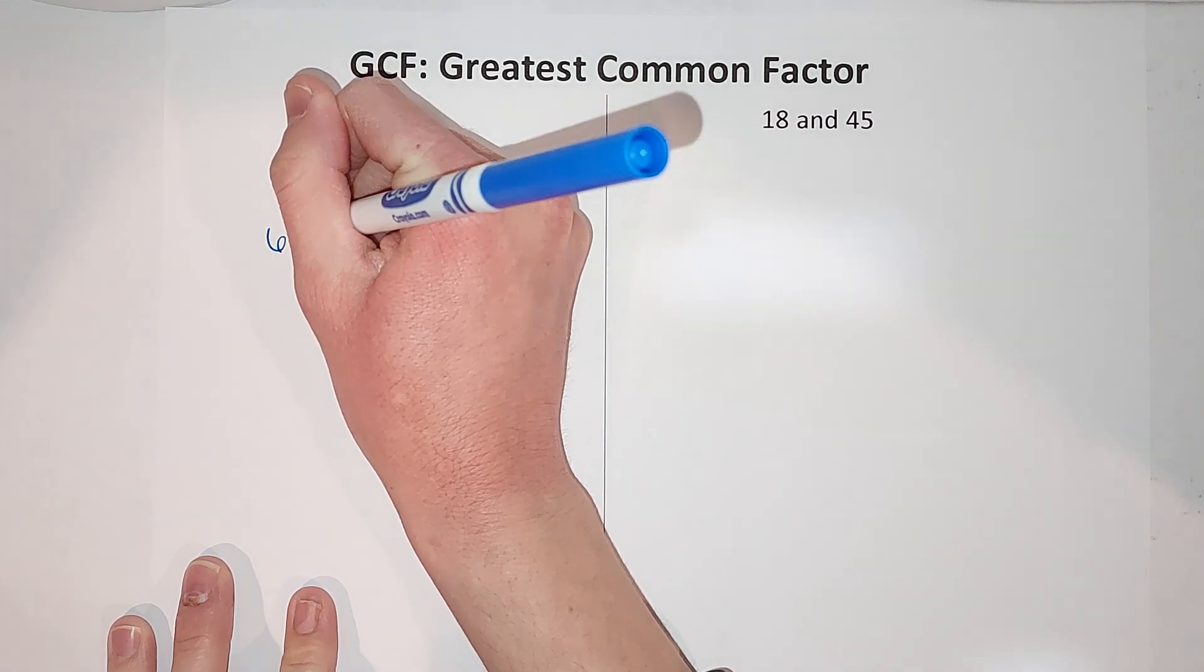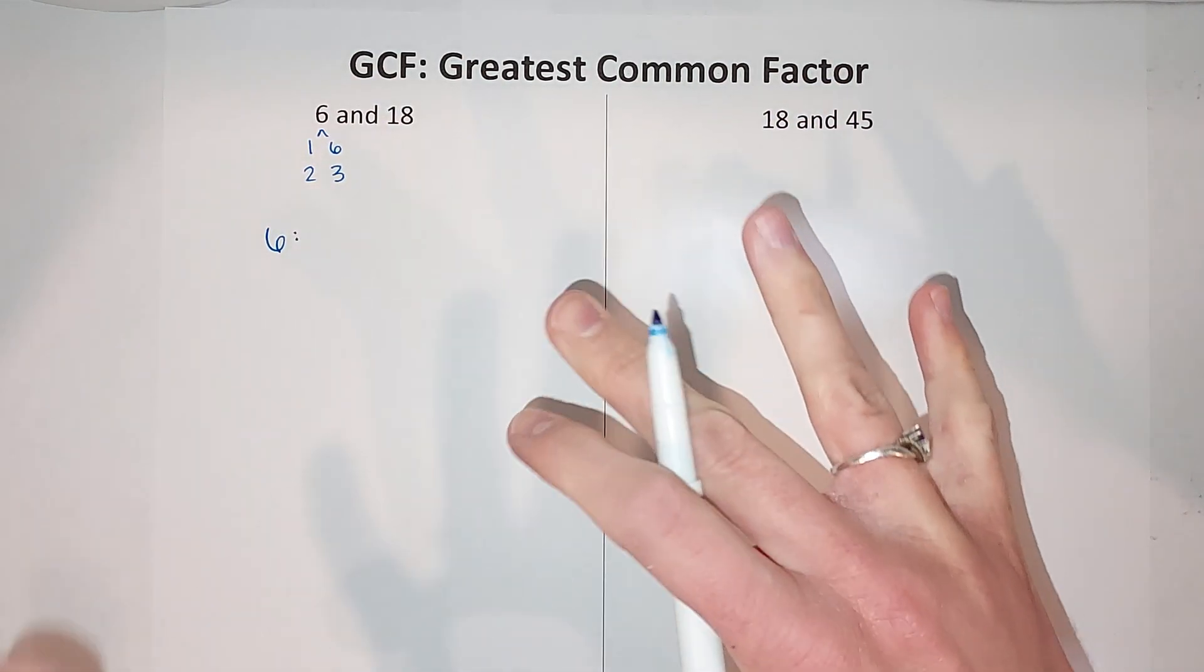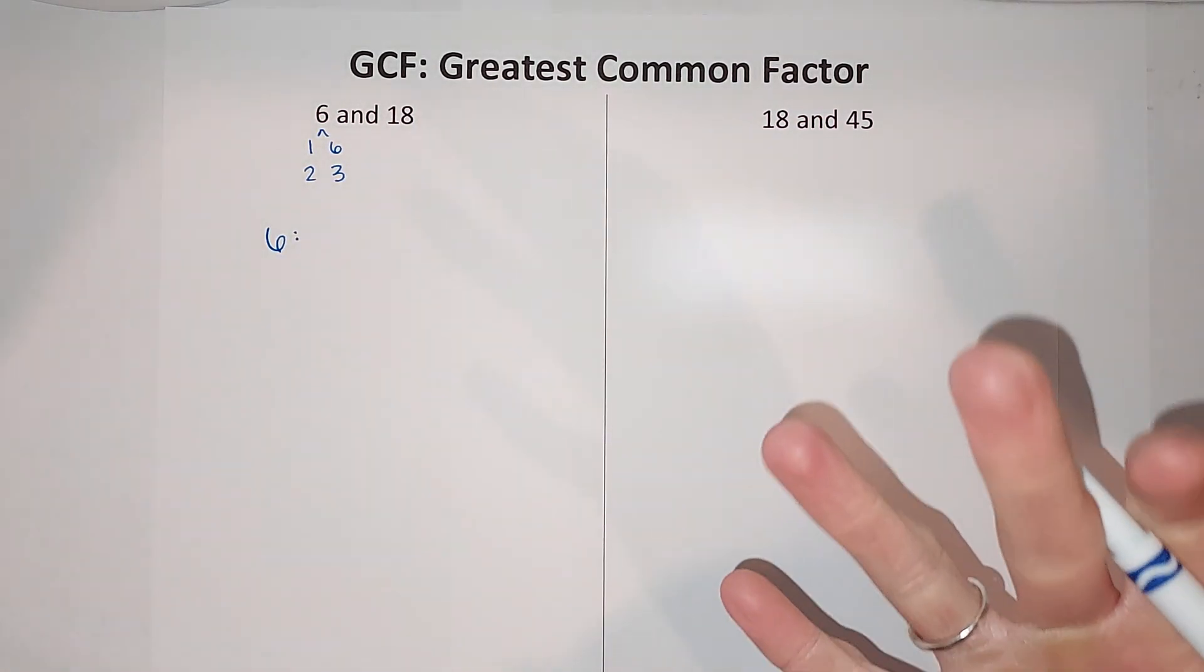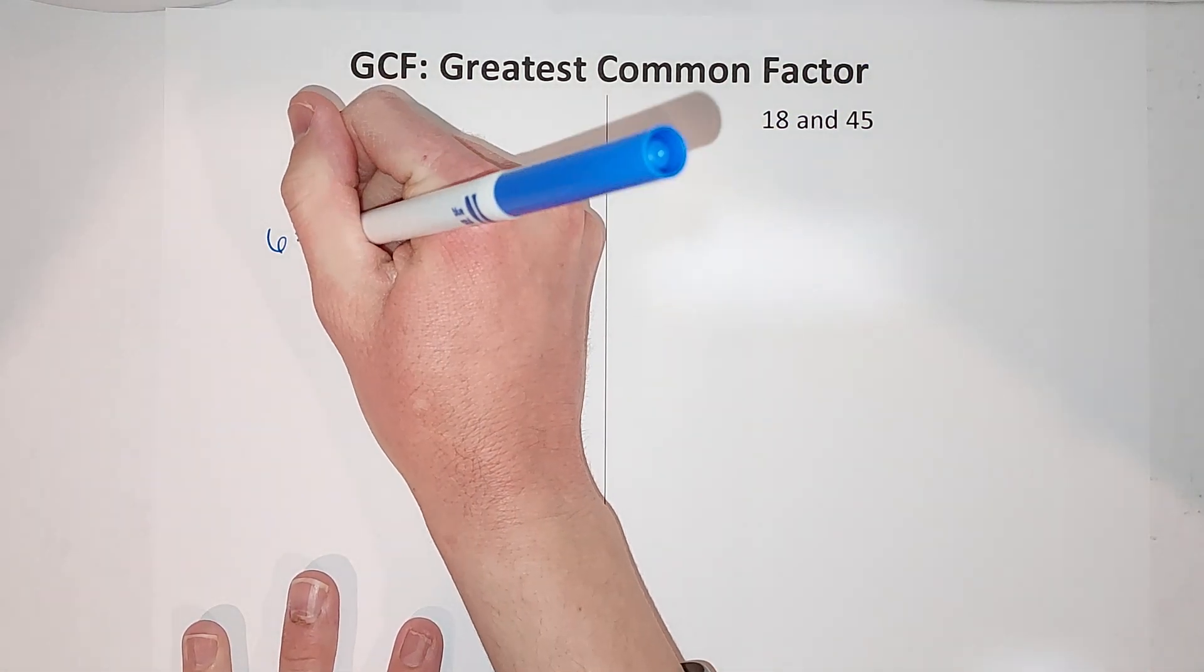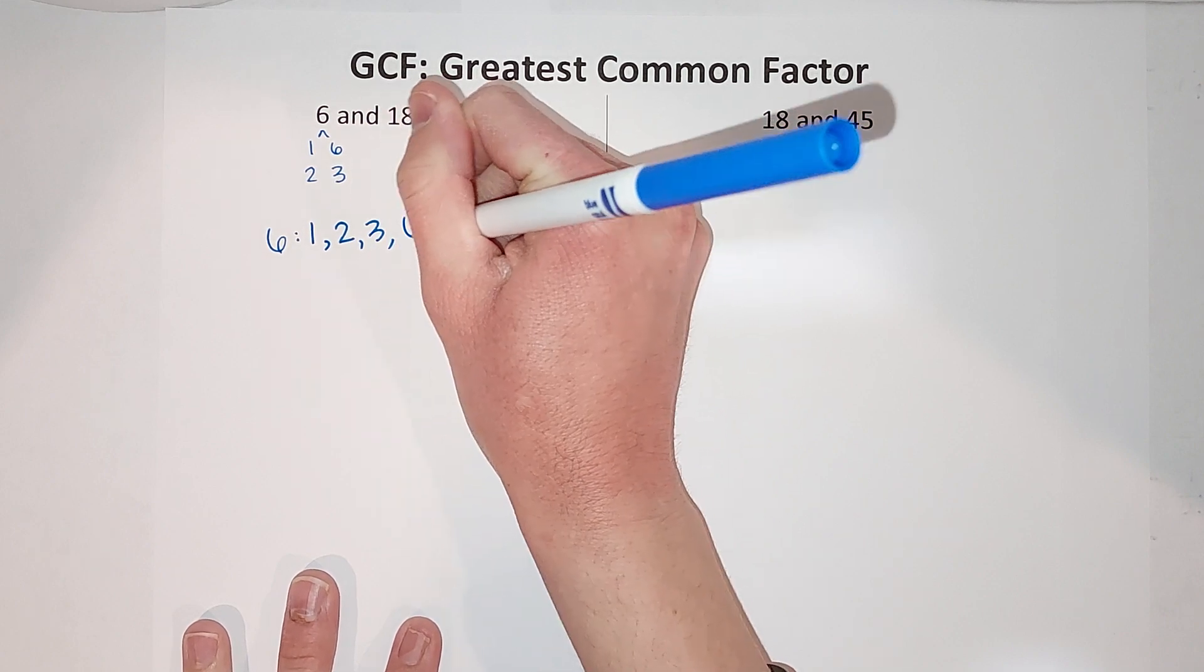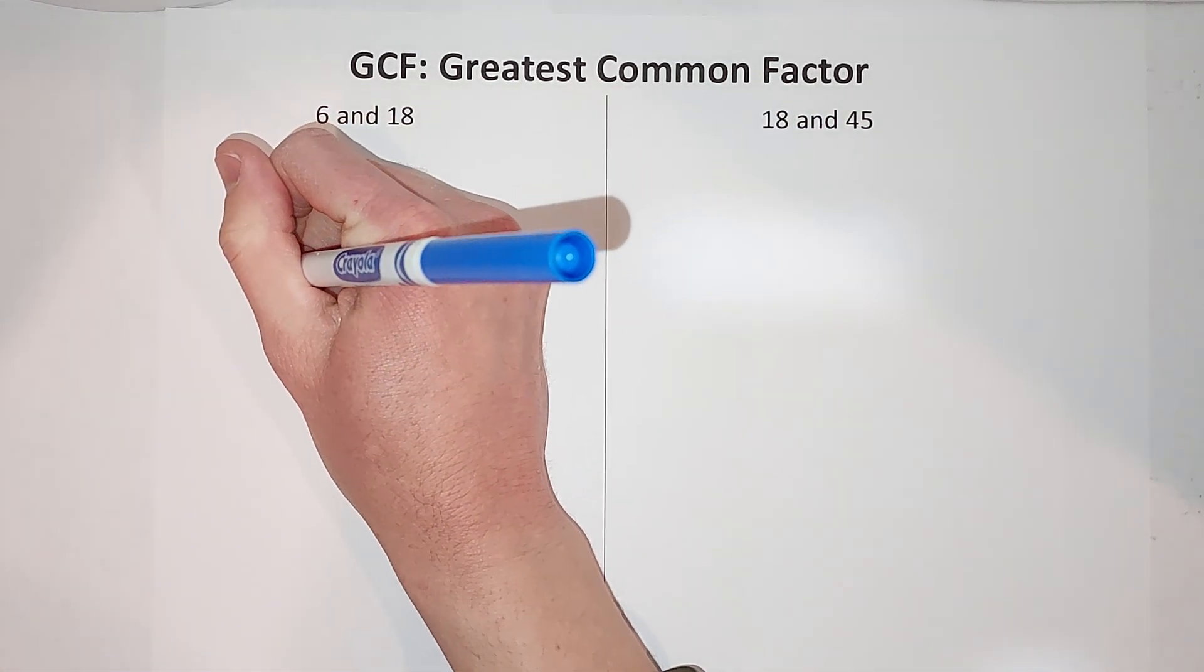I'm going to list my factors of 6 again, sideways this time. Typically when we're listing them out for greatest common factor, it makes it easiest if you go from lowest to highest. So I'm going to list it like this: 1, 2, 3, 6. You don't have to do it that way, but it just makes it easier as you're comparing.